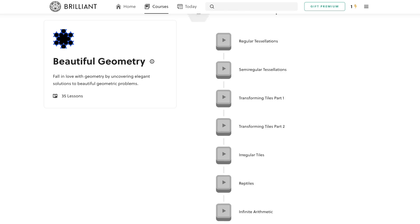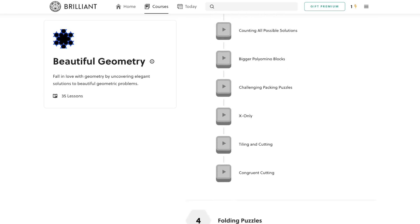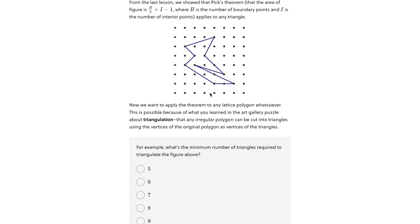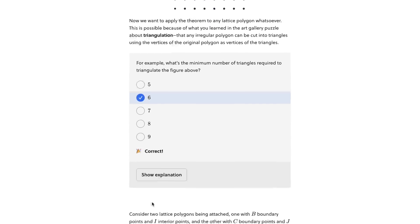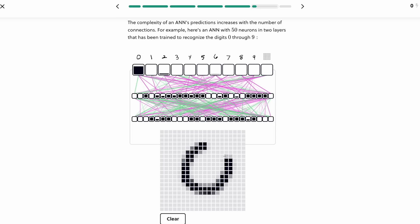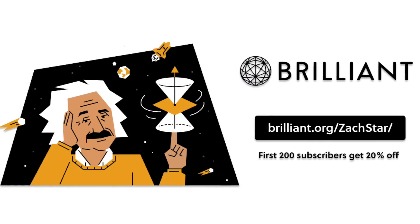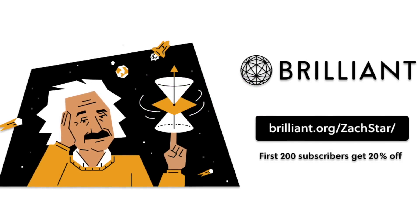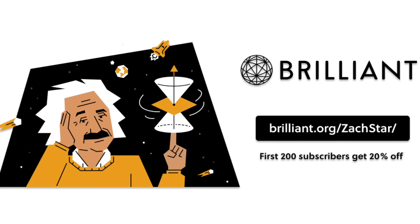One course worth checking out is Beautiful Geometry, which is a more advanced course focused on elegant solutions to geometric problems and puzzles. With Brilliant you can learn at your own pace, and regardless of your education level, you can always find something new to explore. And you can now try everything Brilliant has to offer, free, for a full 30 days. Just go to brilliant.org slash Zach Star or click the link in the description below. Plus the first 200 of you to sign up will get 20% off Brilliant's annual premium subscription.